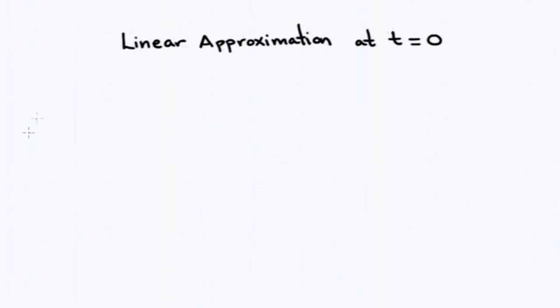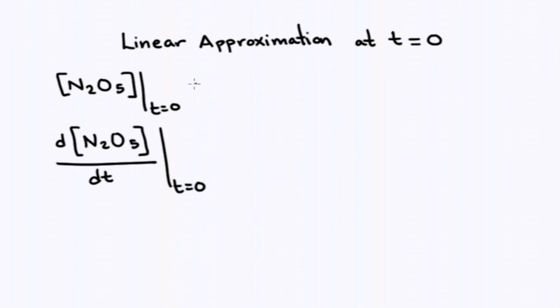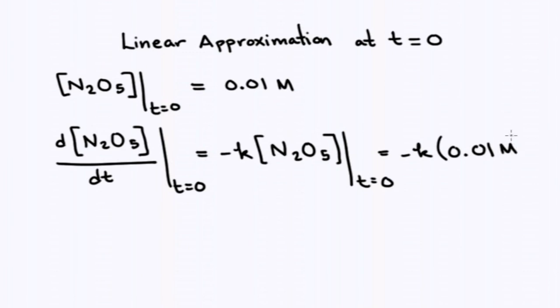In order to produce a linear approximation at t=0, we need two ingredients: the concentration at time zero and the value of the derivative at time zero. The initial concentration was 0.01 molar. To find the value of the derivative, we use our differential equation. And we find that the value of the derivative at time t=0 is just -k times the initial concentration at t=0, or -k × 0.01 molar. Remember that k has units of inverse seconds. Putting this all together into the formula for the tangent line at zero, we see that the linear approximation is given by T_0(t) = 0.01 molar(1 - kt).